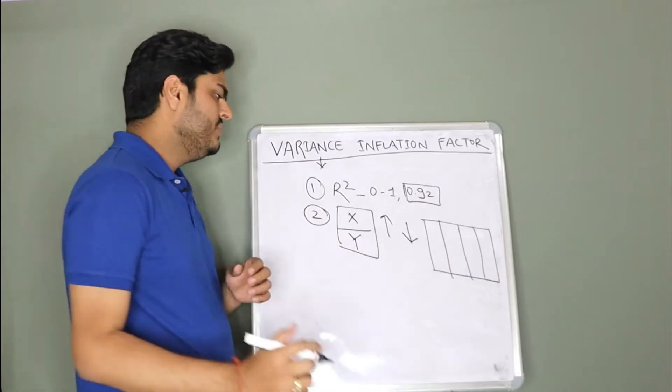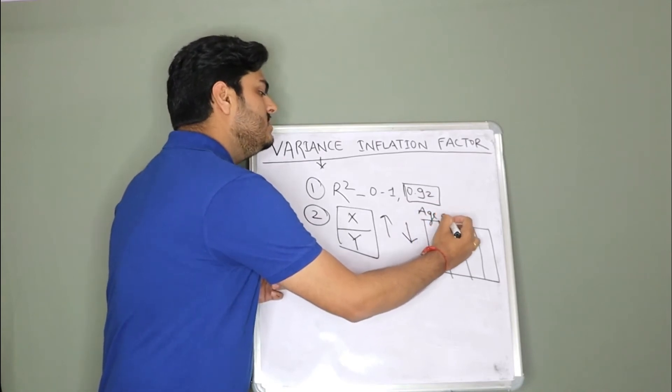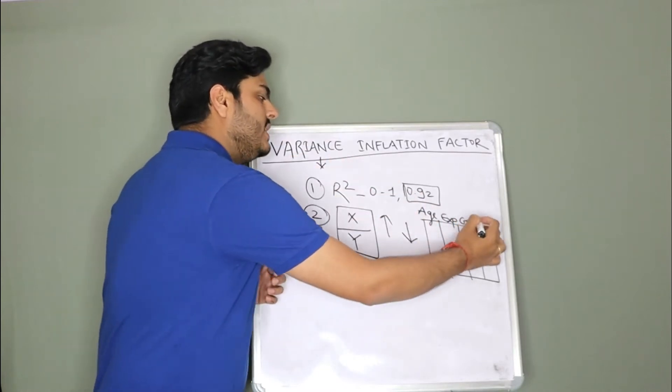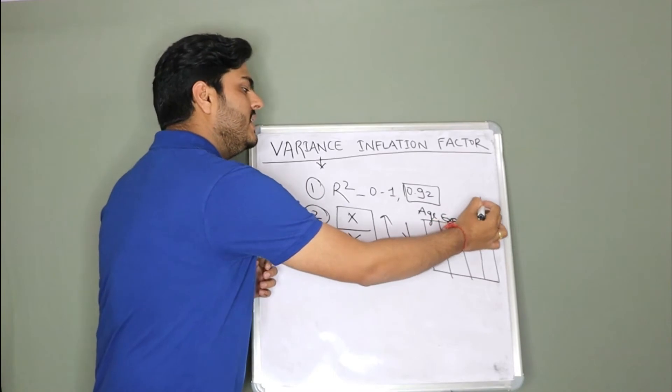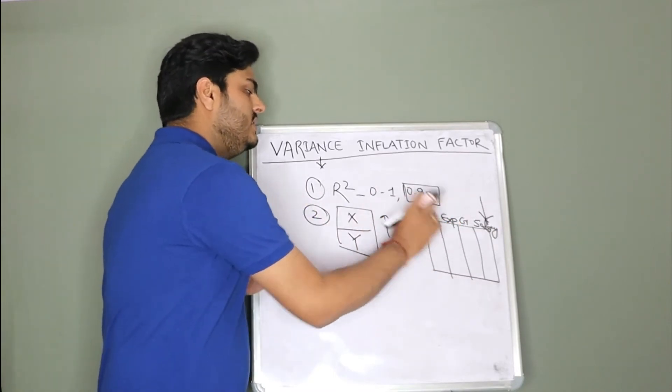In your data you capture employee data of an organization. Same example which I give always. In one column you take age, in other column you take years of experience, in third column you take gender, and your target variable is salary. So salary is your target variable. Your independent columns are age, experience, gender.